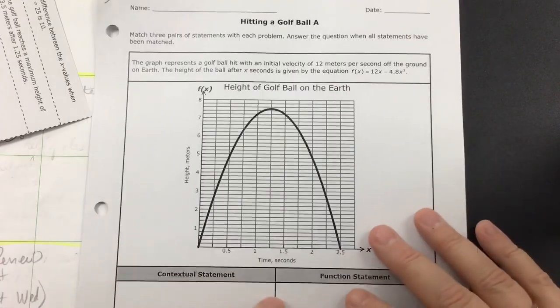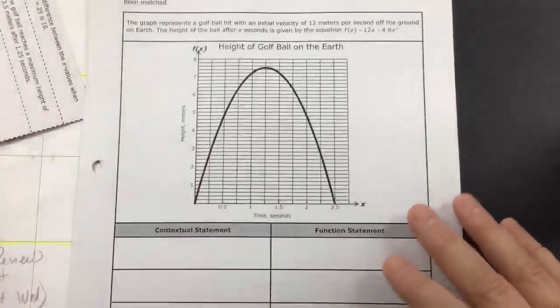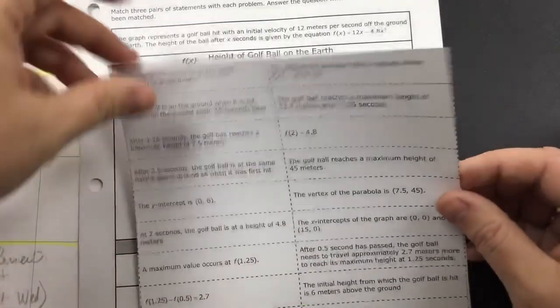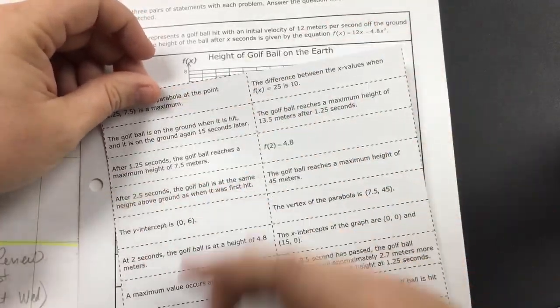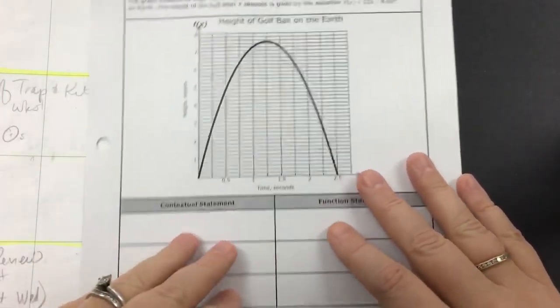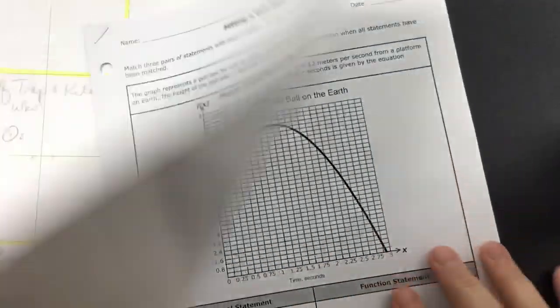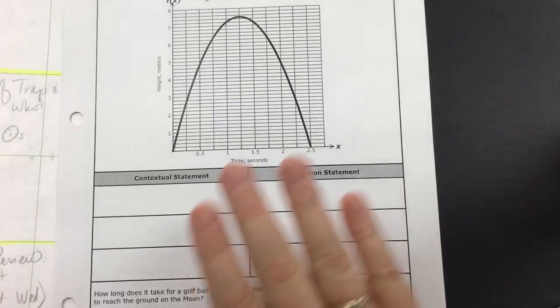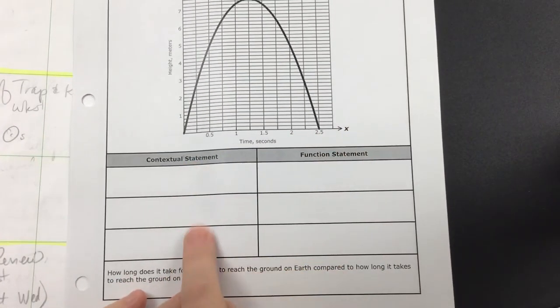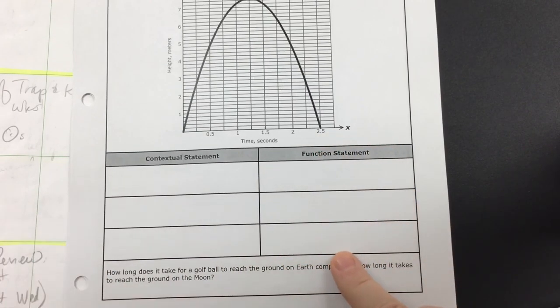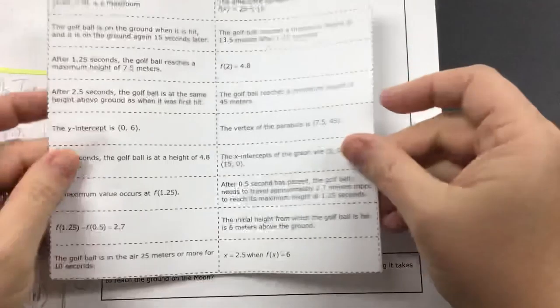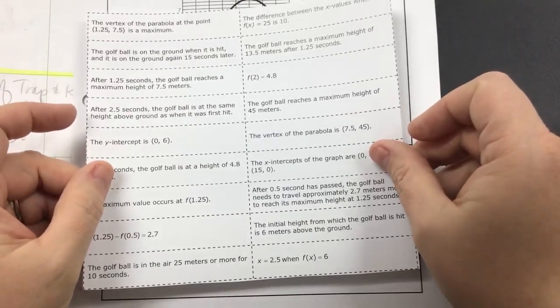The first three parts are about hitting a golf ball. You're going to take the first page that has all these boxes on it. I trimmed it up and you're going to cut them out individually into pieces. On the first three activities, hitting a golf ball A, hitting a golf ball B, and then part C, what you're doing is each activity, you're going to have three contextual statements and then three function statements from these boxes to pick from.